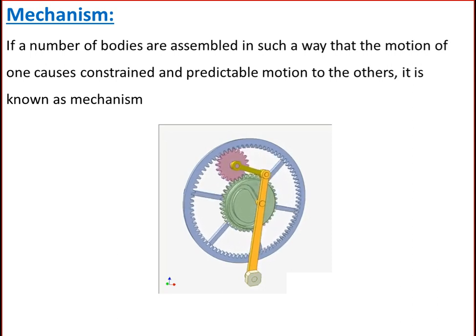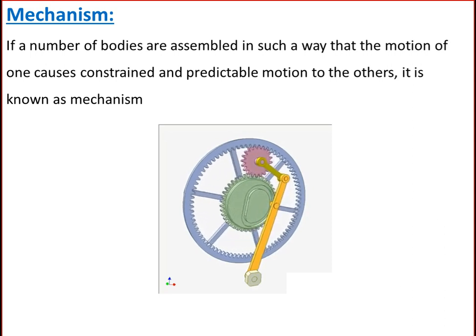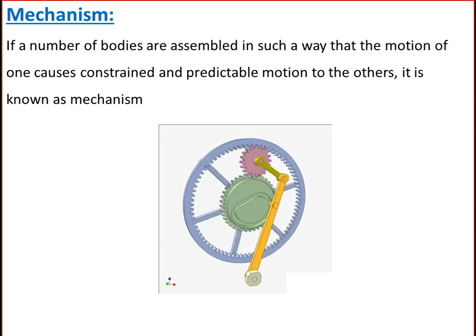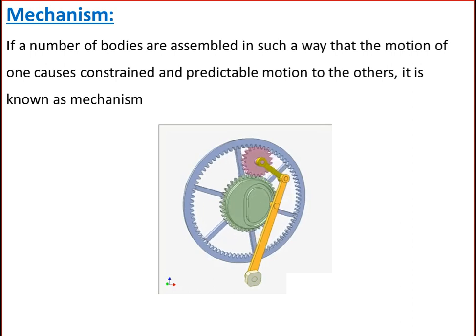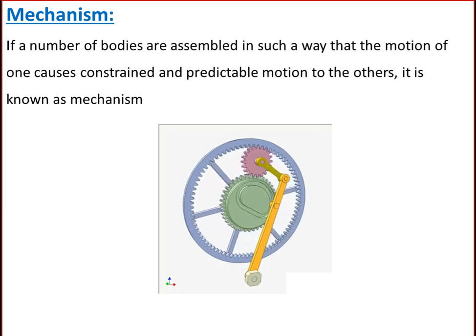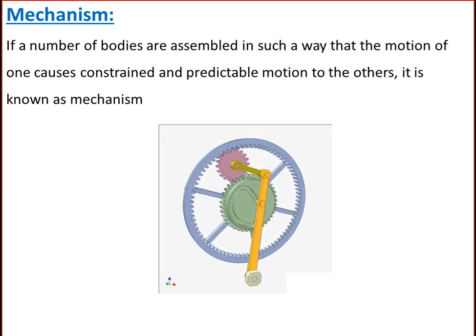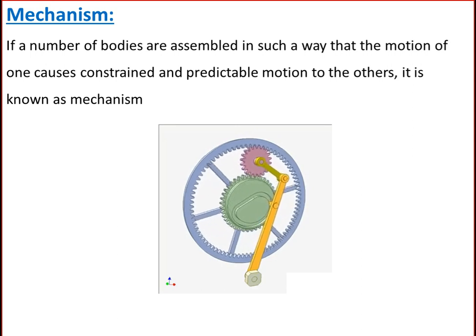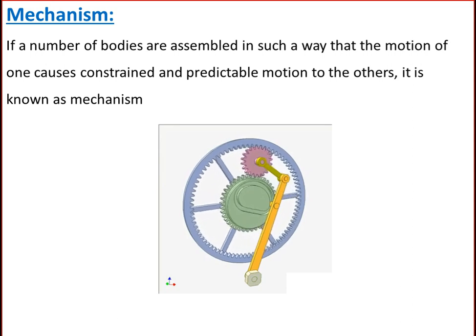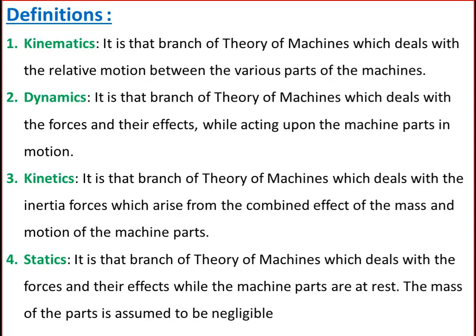What is a mechanism? If a number of bodies are assembled in such a way that the motion of one causes constrained and predictable motion to the others, it is known as a mechanism. A mechanism transmits and modifies motion. A machine is a mechanism or a combination of mechanisms which, apart from imparting definite motion to the parts, also transmits and modifies the available mechanical energy into some kind of desired work. Thus, a mechanism is a fundamental unit.